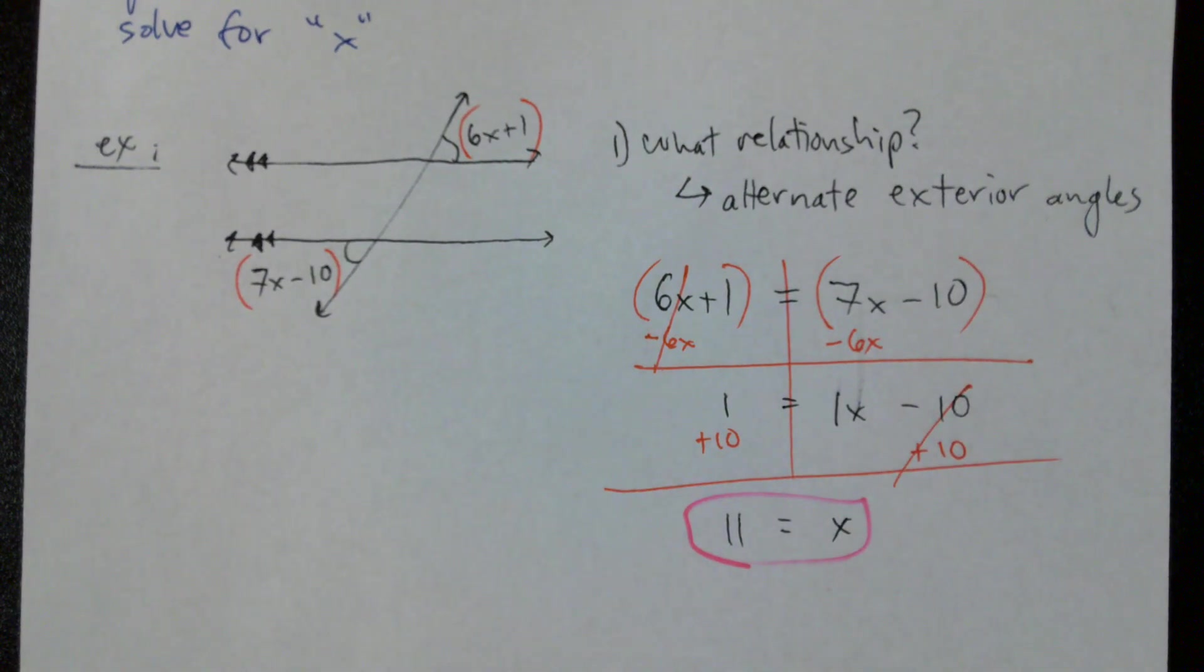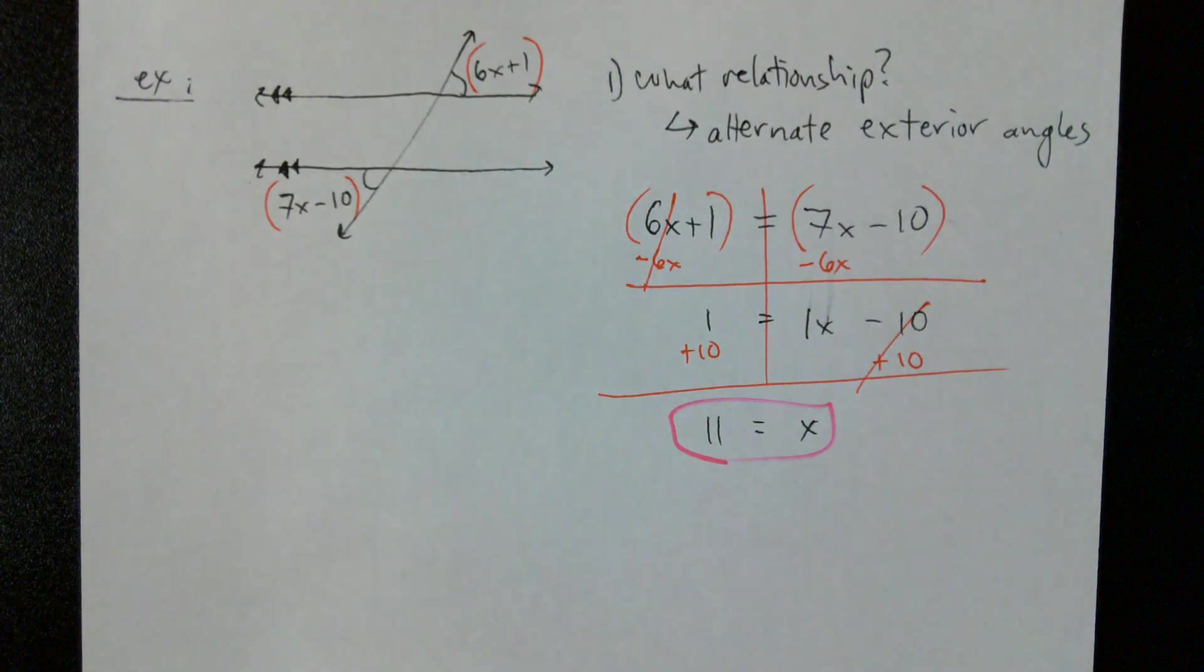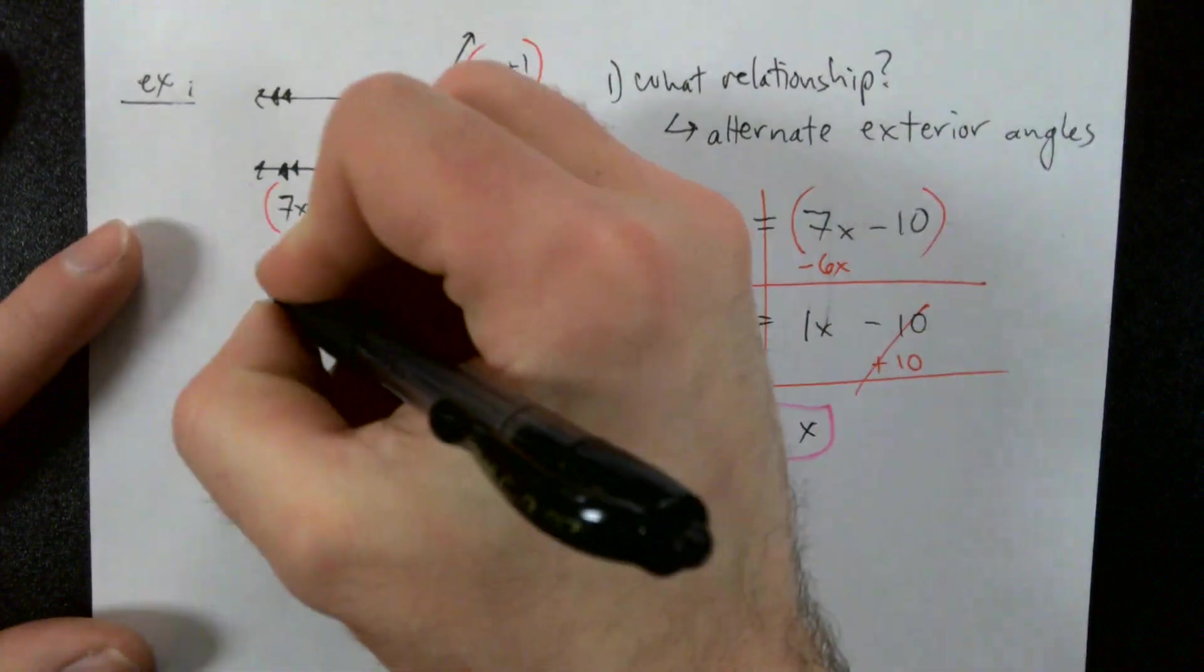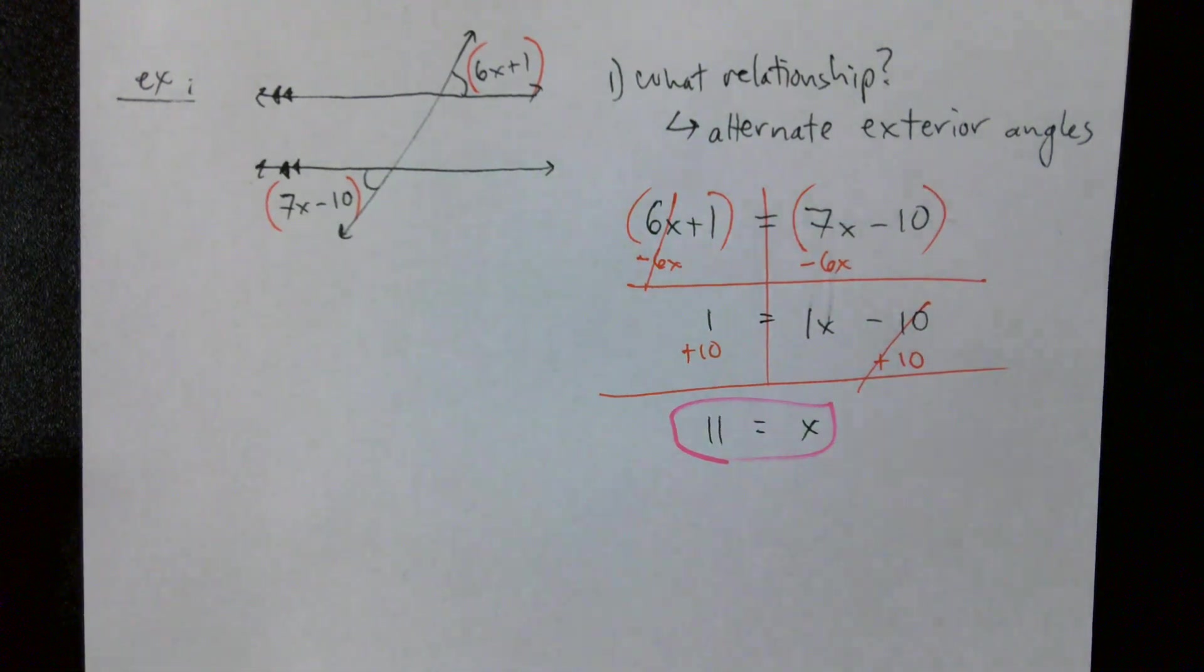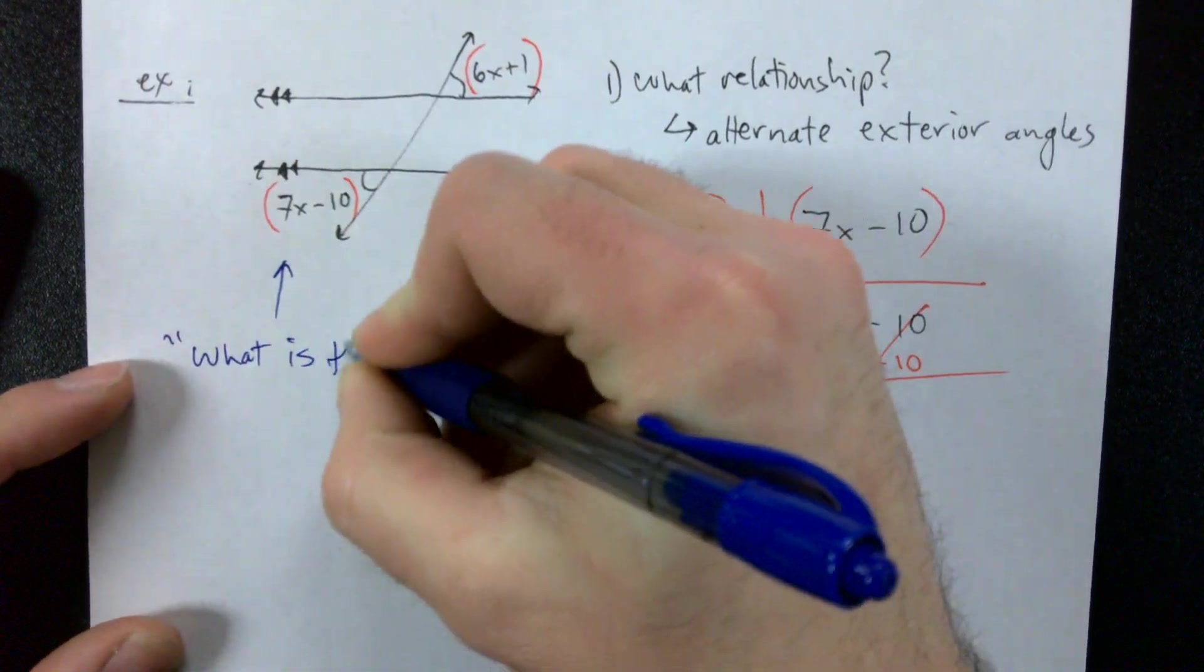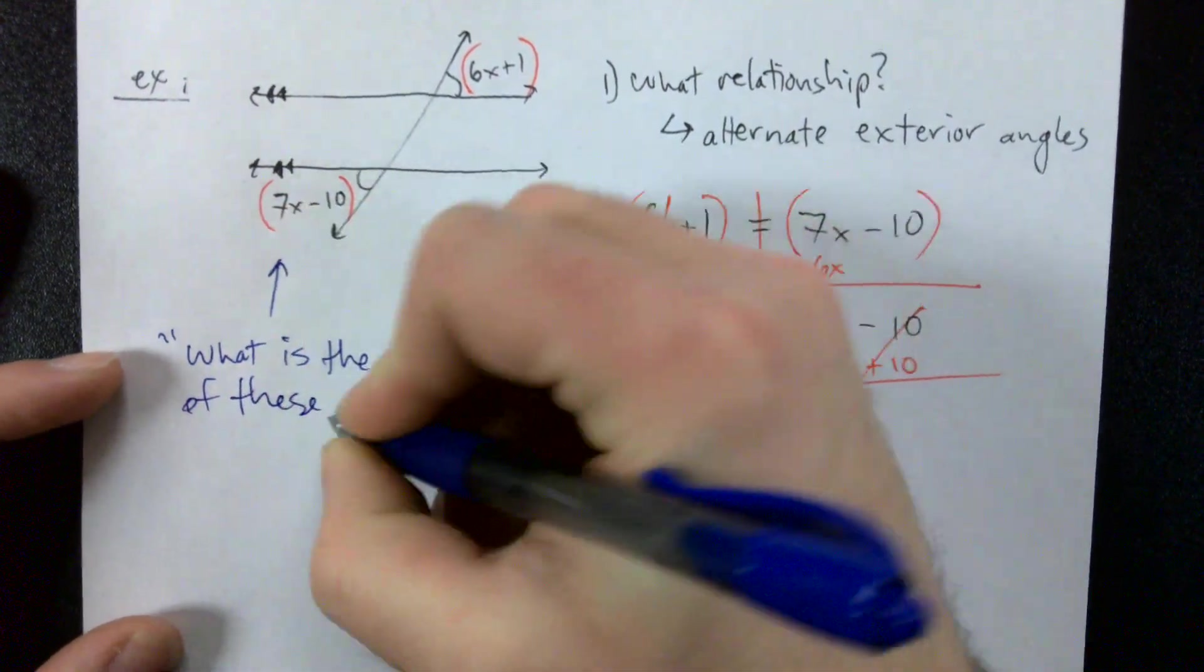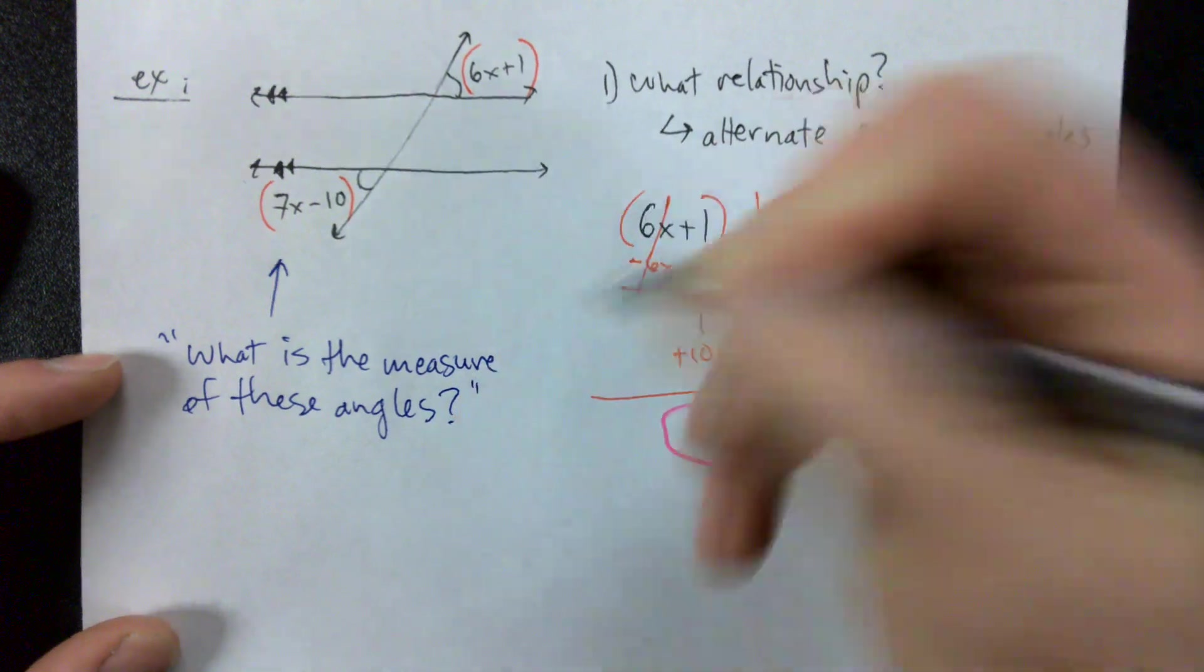If you prefer to switch it around and write x equals 11, that's fine. They're the same exact answer. Now we're going to take this one small step further. We're going to answer the question, what is the measure of these angles?